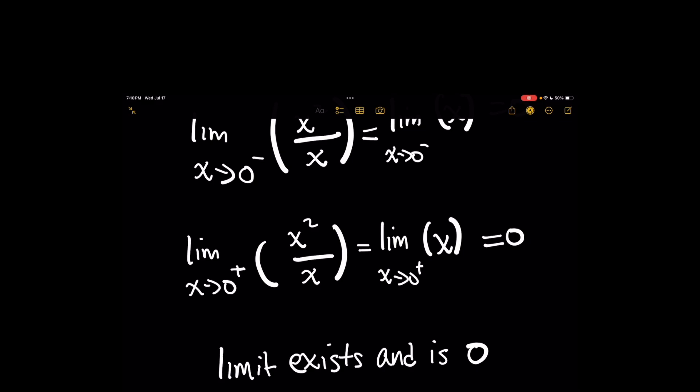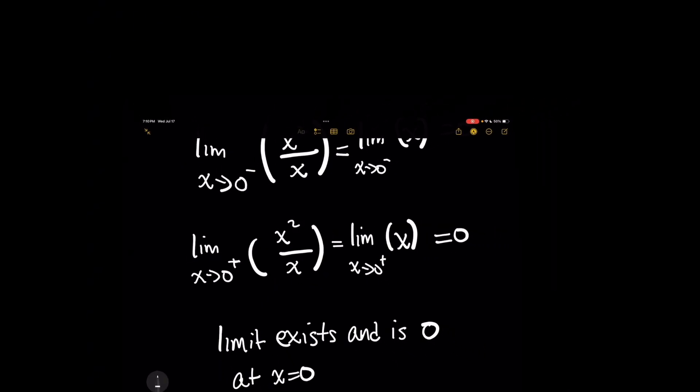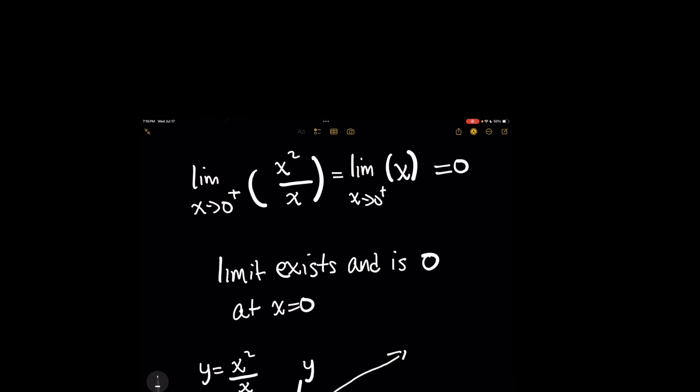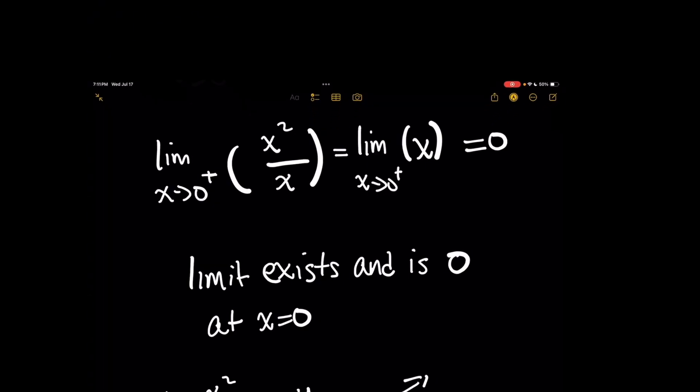And how does this help us then to answer the original question of x squared over x and whether it equals x? Well, it gives a clue about maybe how we should approach this, looking at the domain of x squared over x. So just because the limit exists at x equals 0, it doesn't necessarily mean that the origin is included in the domain of the function.